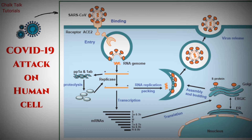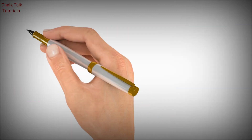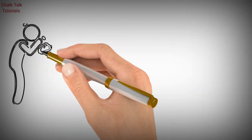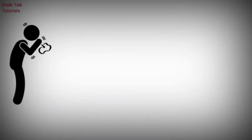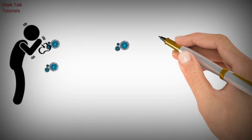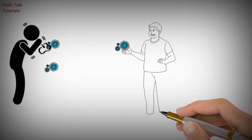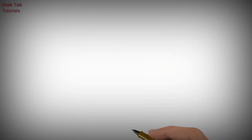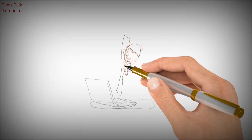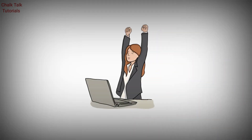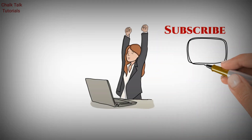After forming thousands of copies, they come out from the body of the infected person through sneezing or coughing and are now ready to infect more healthy persons. This was the concept behind coronavirus disease.